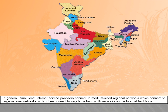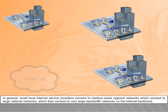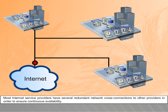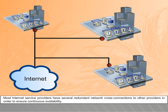In general, small local internet service providers connect to medium-sized regional networks, which connect to large national networks, which then connect to very large bandwidth networks on the internet backbone. Most internet service providers have several redundant network cross-connections to other providers in order to ensure continuous availability.